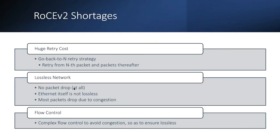What's the RoCEv2 shortage? First, RoCEv2 and RDMA both have a huge retry cost. Why? Because the RDMA protocol defines a go-back-N retry strategy. This strategy will retry from the lost packet and all packets thereafter. For example, if RDMA detects the Nth packet is lost, even though it has already received packets N+1 and N+2, when doing retry it will retry from the Nth packet and all packets thereafter. That's why RDMA has a huge retry cost compared to TCP. TCP only does selective retry — it only retries the lost packet.